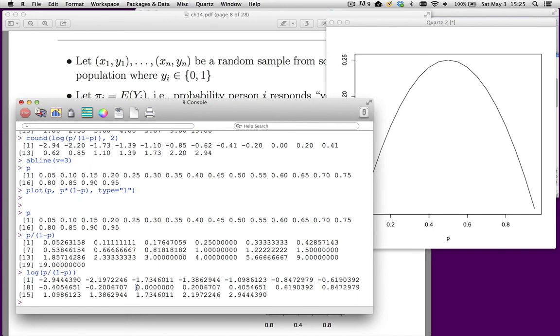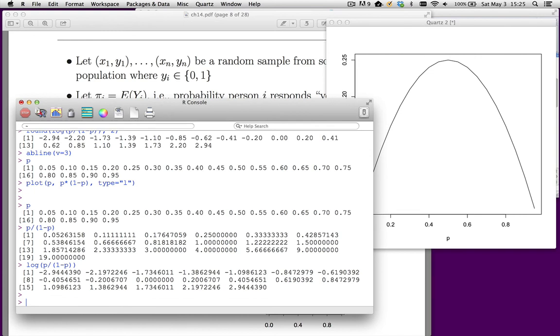This corresponds to the value 0.5. If you take 0.5 divided by 1 minus 0.5, you get 1. What's the log of 1? It's 0. And then on the other side, you get positive values that actually go to infinity as π goes to infinity. Now we could plot this. Let's do that.